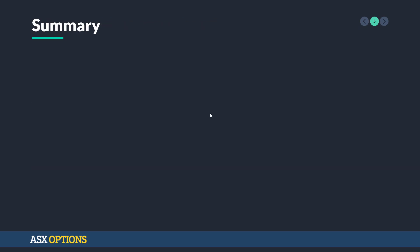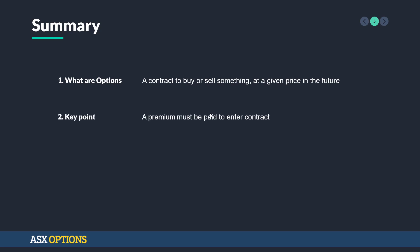In summary, options are a contract to buy or sell something at a given price in the future. The key point is that a premium must be paid to enter this contract to get all the flexibility. And why do we care? This can be a great way to hedge risk or for speculation. Thank you very much for listening. This is ASX Options — please join us for our next video.